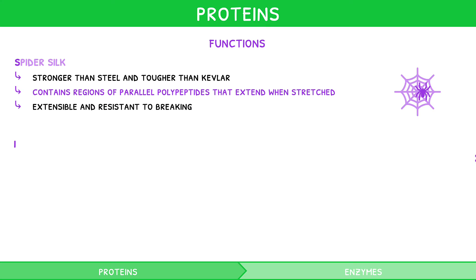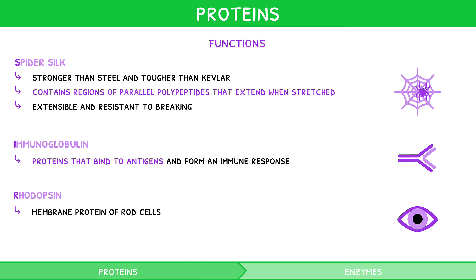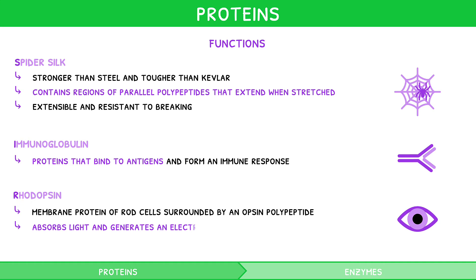I stands for immunoglobulin, i.e. antibodies, which are proteins that bind to antigens in humans and form an immune response. R stands for rhodopsin, which is a membrane protein of rod cells that is surrounded by an opsin polypeptide. It absorbs light and generates an electrochemical response to create vision.